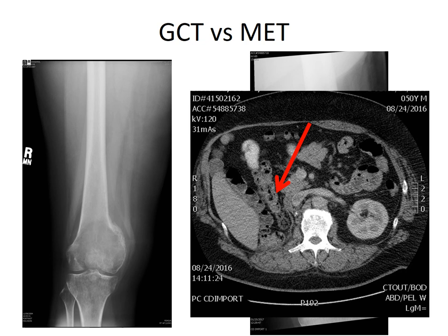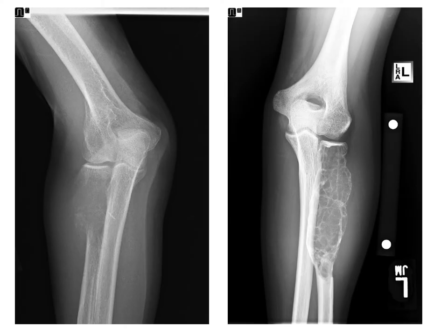It also helps that the patient on the right had a CT chest, abdomen, and pelvis, where the red arrow indicates the absence of a kidney — the result of a prior nephrectomy for renal cell carcinoma.